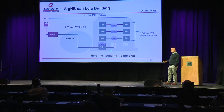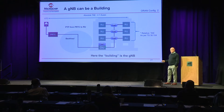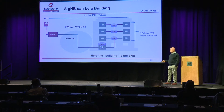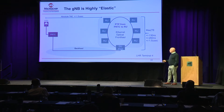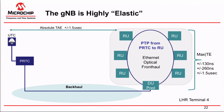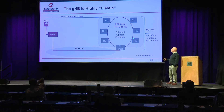This looks like a gNodeB, because you have a DU and RUs — so suddenly the building is the gNodeB. Or is it a C-RAN? In this environment, let's have a PRTC in the core and the backhaul using 8275.1 to a DU pool. This could be Heathrow Terminal 4, with RUs right around Heathrow sitting on an optical layer.